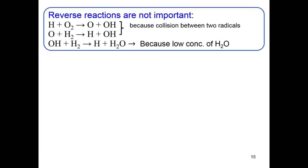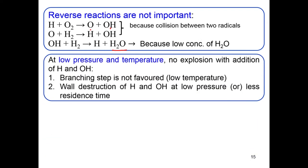The reverse reactions between two radicals — such as OH + O going back to H + O2 — are not really favored because they involve collision between two radicals, which are present in very low concentration and are also very energetic, so their collisions do not result in the backward reaction. Also, the reverse of the OH reaction is not favored because at the time of ignition there is very low concentration of the product water, which grows only in the later stages of oxidation.